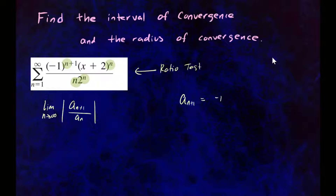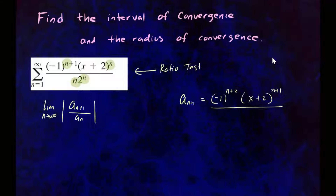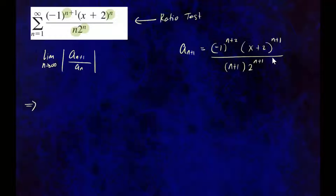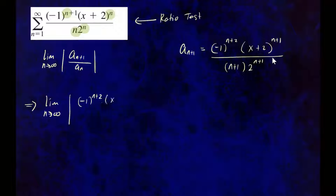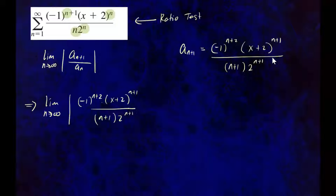So you'll have negative 1 to the power n plus 2, and then x plus 2 to the power n plus 1, over n plus 1 times 2 to the power n plus 1. That's your n plus 1 term. Now let's substitute that into our ratio test formula: the limit as n approaches infinity of a sub n plus 1, which is negative 1 to the power n plus 2 times x plus 2 to the power n plus 1, divided by n plus 1 times 2 to the n plus 1.